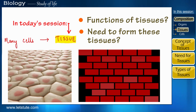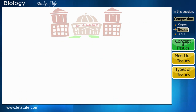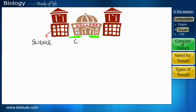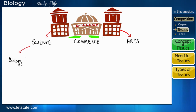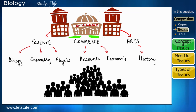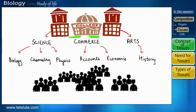With an everyday life example — as we all know, a college has many departments such as the science, commerce, and arts departments, and each department has its own specific subjects. Many students choose to study a particular subject based on their liking.